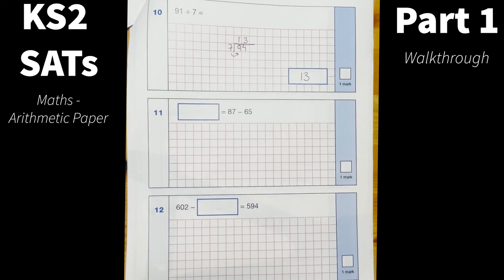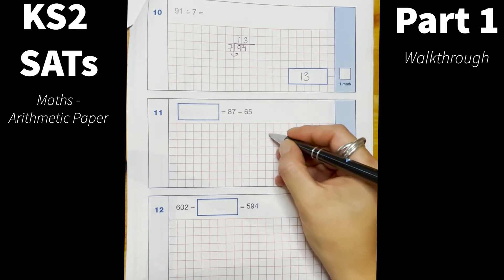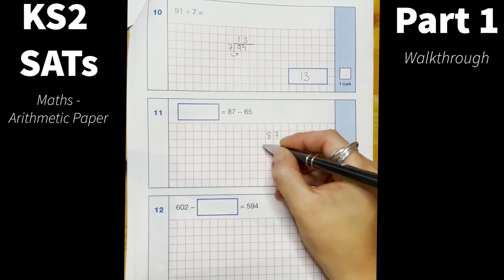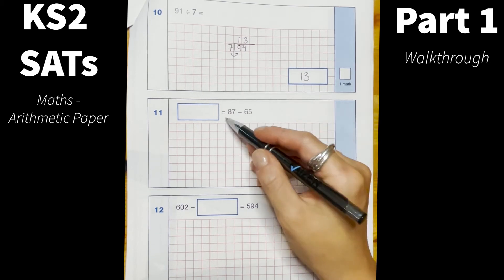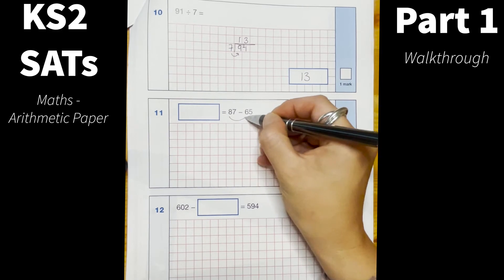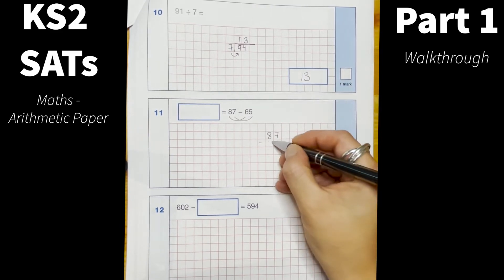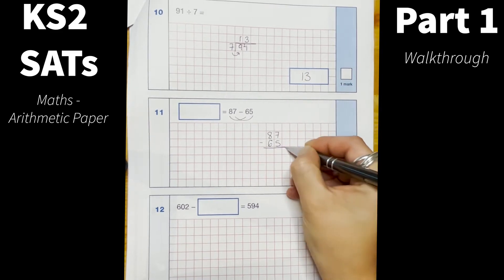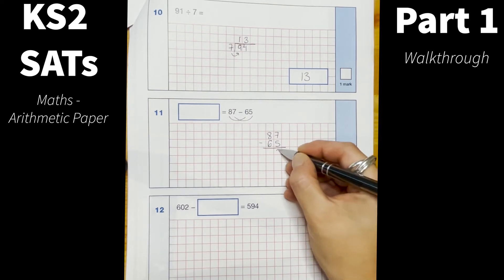Number 11, 87 subtract 65. So again there are lots of different methods children could use for this, subtract the tens, subtract the ones, or like we did before just a simple column method and we will get 22.